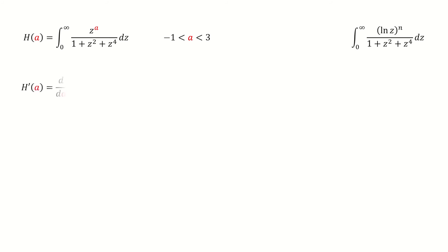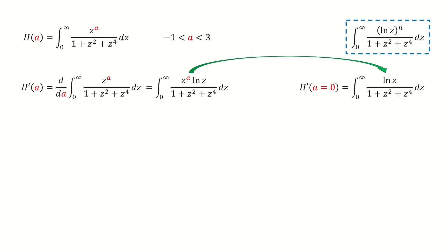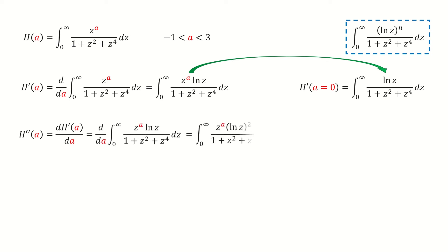And then we do the derivative on the function h. Note that this derivative is with respect to the variable a, so we treat z as constant. Because a is in the power index, after taking the derivative we get a log z term on the numerator. And then we set a equals to 0, so we got here.